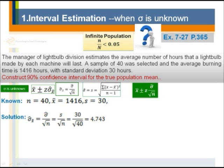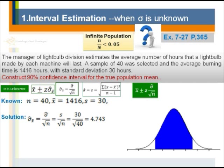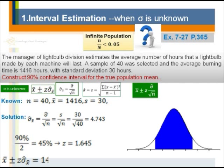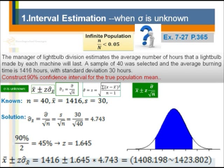We visualize the 90% confidence interval by splitting it into two parts of 45% each, then check table A1 with 0.45 to get the z-score of plus and minus 1.645. The interval is the sample mean plus and minus the z-score times the standard error: 1,416 ± 1.645 × 4.743. This gives a lower limit of 1,408.198 and an upper limit of 1,423.802, meaning 90% of our population mean lies between these two numbers.